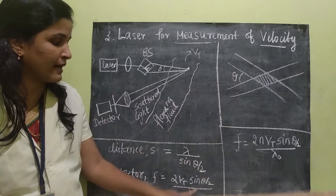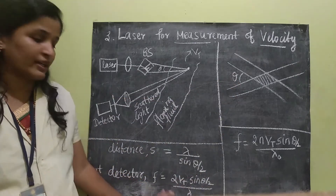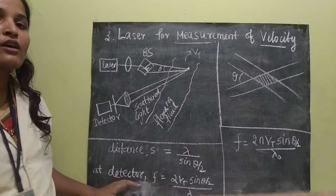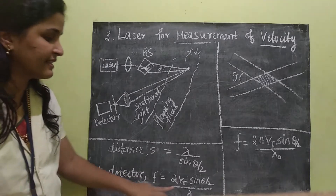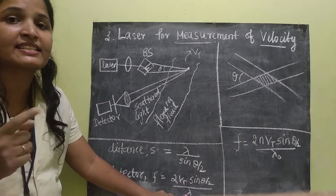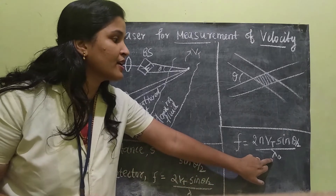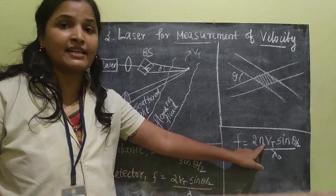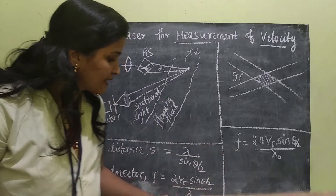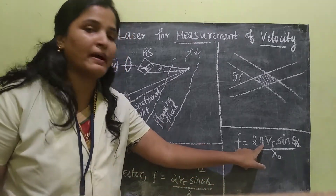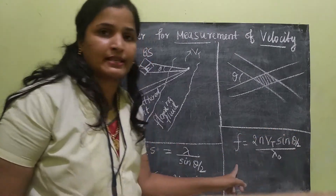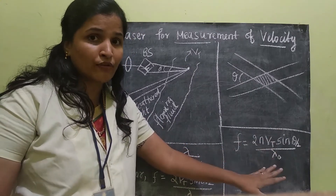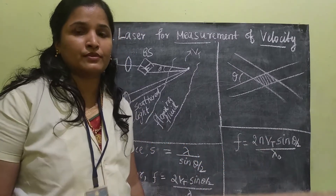Because of the interference pattern, the frequency is shifted. We use a small factor where lambda is replaced with lambda-naught divided by N, where N is the refractive index. So this is the frequency, where lambda-naught is the wavelength of the laser at vacuum.